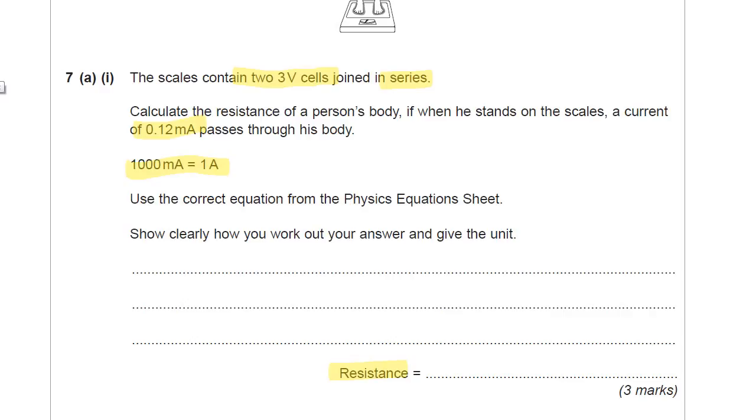All right. So the first thing to do is to work out the potential difference, V. Well, it's not 3 volts, which is the obvious thing to do. And unfortunately, if you did use 3 volts, you couldn't get full marks. But you may still get one mark if you used 3 volts. Two 3-volt cells joined in series. So that means one cell and then a second cell. And if you join cells up in series like that, well, you add up the voltages and you get a total of 6 volts. So you should use V as equal to 6 volts for this question.